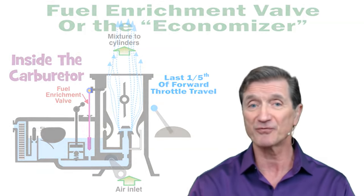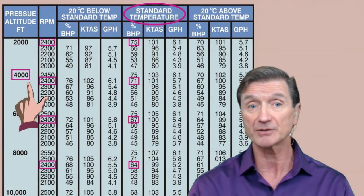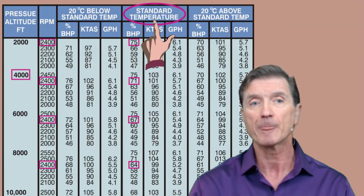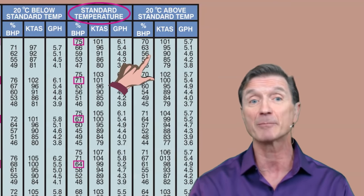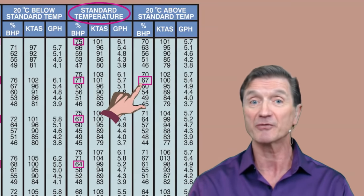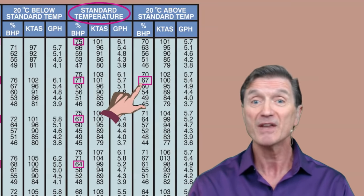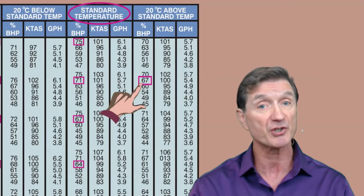Fuel enrichment works just fine as long as you are departing at density altitudes less than 4,000 feet. At higher density altitudes where the engine can't develop more than 75% power, you don't need fuel enrichment for takeoff. As a result, if you don't lean the mixture for takeoff at higher density altitudes, the excessively rich mixture will dramatically reduce your engine's performance. Think tree freshener time.